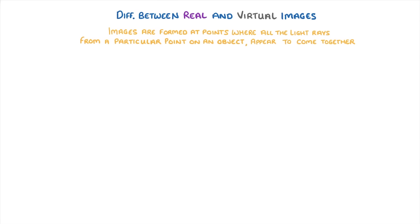The last thing we need to cover is the difference between real and virtual images, which to be honest is kind of a weird concept, so just bear with us and hopefully it'll make sense. Now, regardless of whether it's real or virtual, images are formed at points where all the light rays, from a particular point on an object, appear to come together.